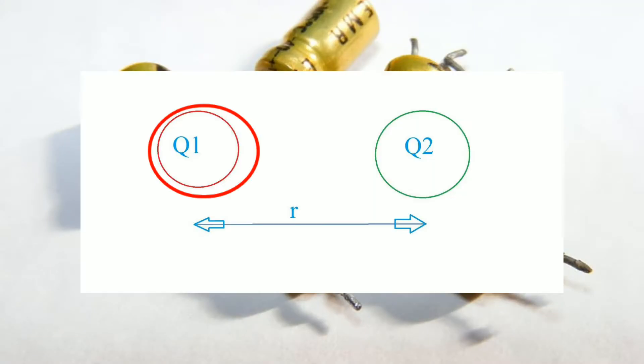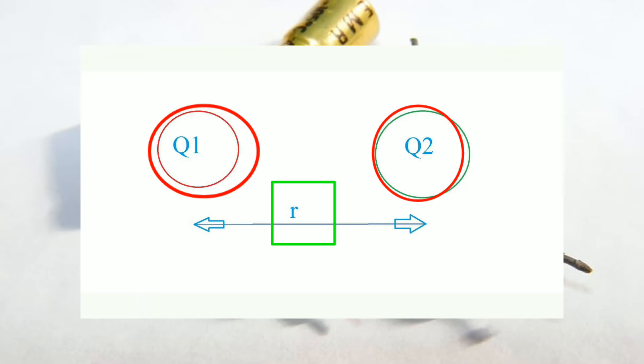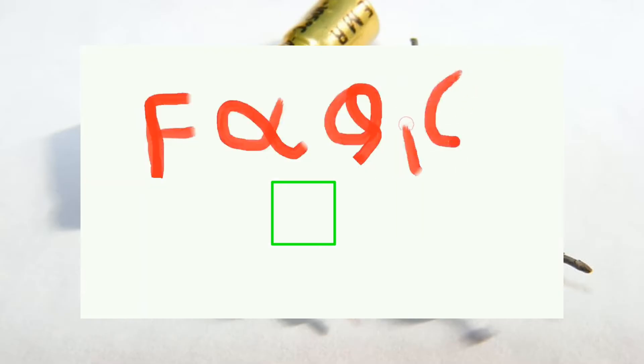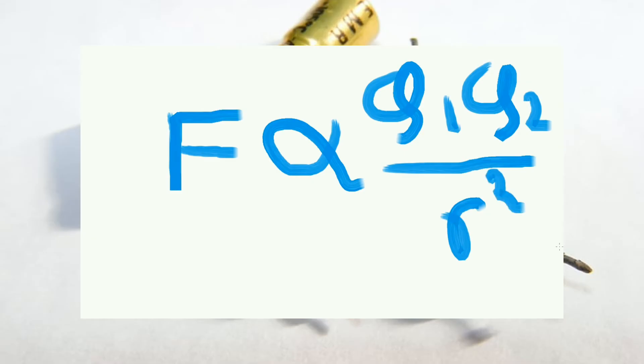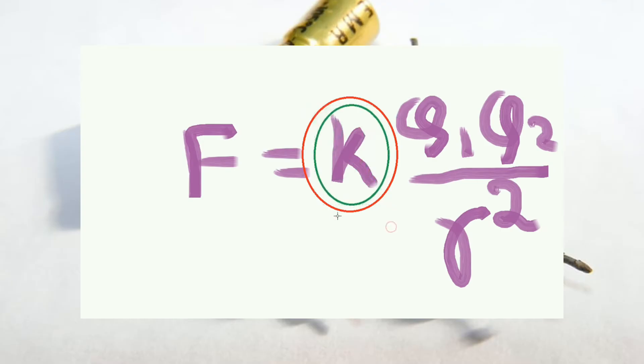Here there are two charges q1 and q2 and the distance between these two charges is R. According to Coulomb, force is proportional to the product of the two charges q1 and q2 and force is inversely proportional to the square of the distance between them. So ultimately F proportional to q1 q2 by R square, or F equal to k q1 q2 by R square, where k is the constant.